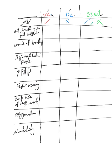All breaths get full support in volume control and pressure control. In SIMV, only the backup rate breaths get full support — any extra breaths above the backup rate receive only partial support or zero support, depending on your settings. This means work of breathing is less in volume control and pressure control, and more in SIMV.